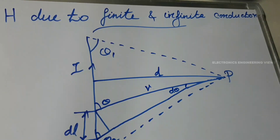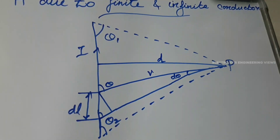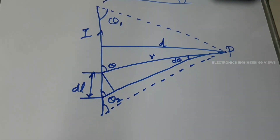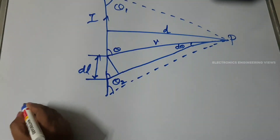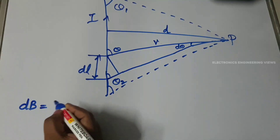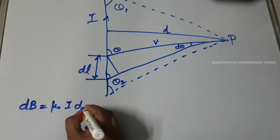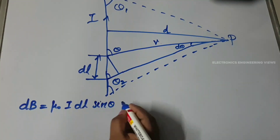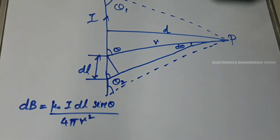By Biot-Savart law, the flux density at point P due to the current element dl is given by: dB is equal to μ₀ · I · dl · sinθ divided by 4πr².